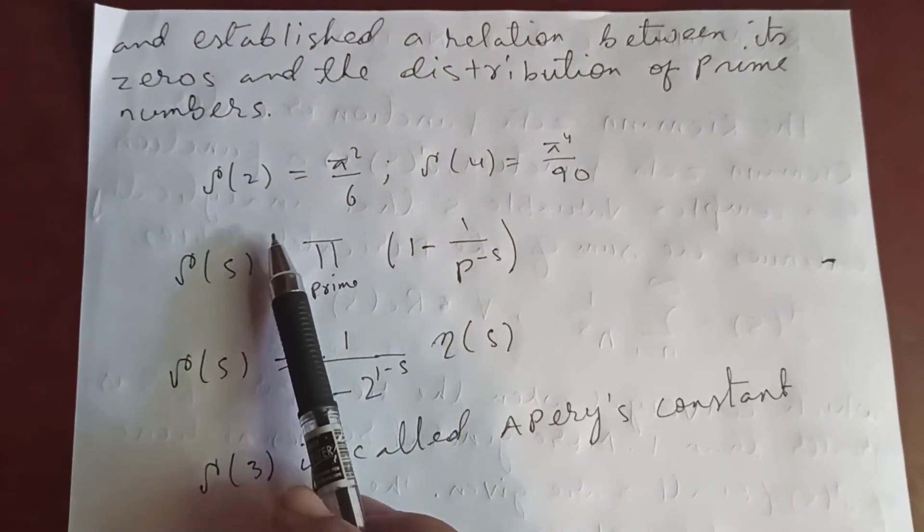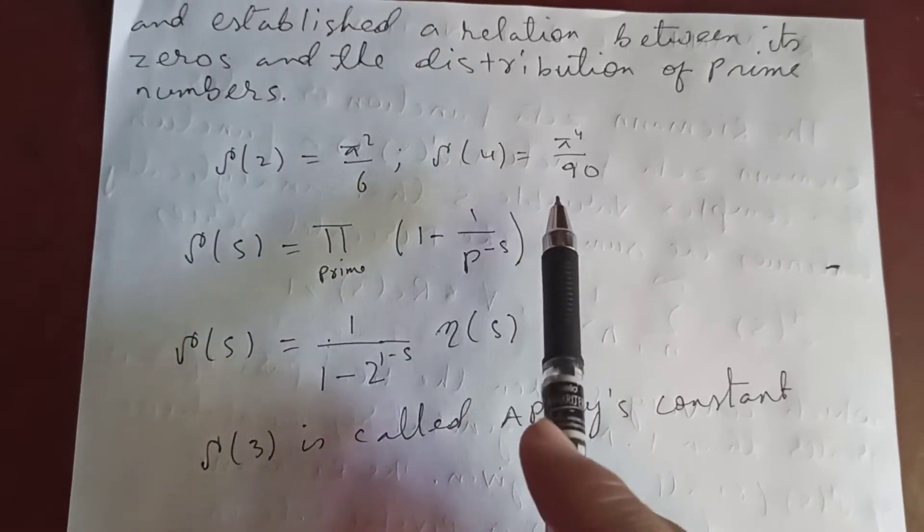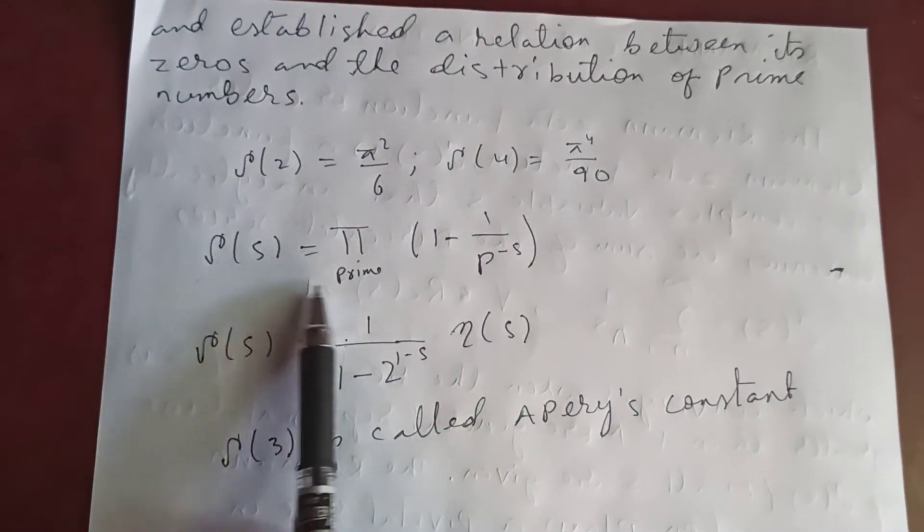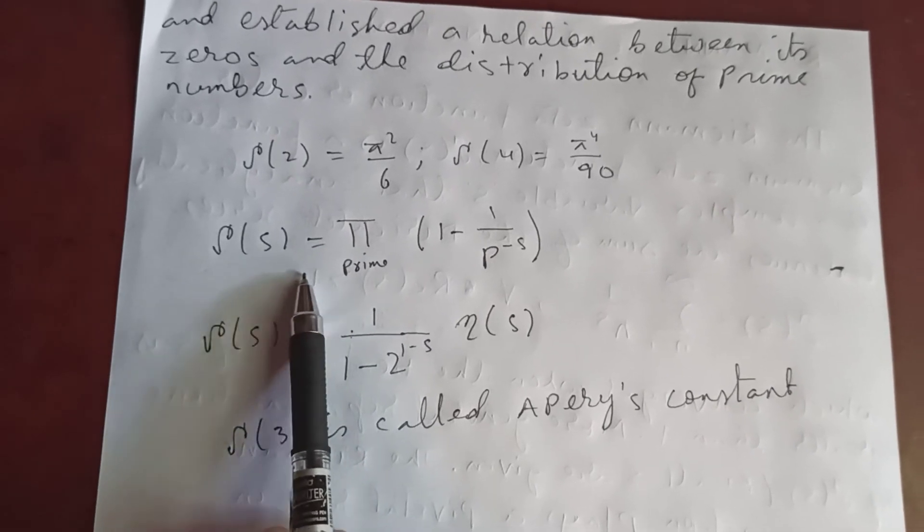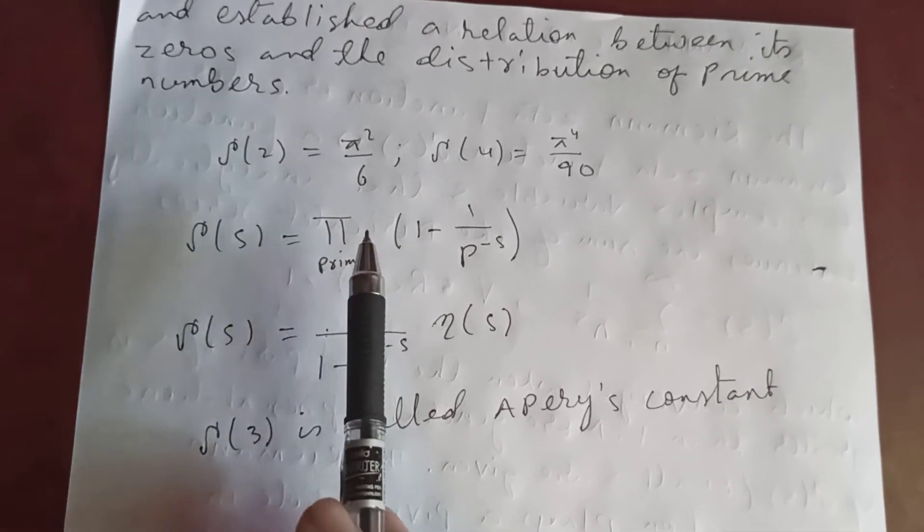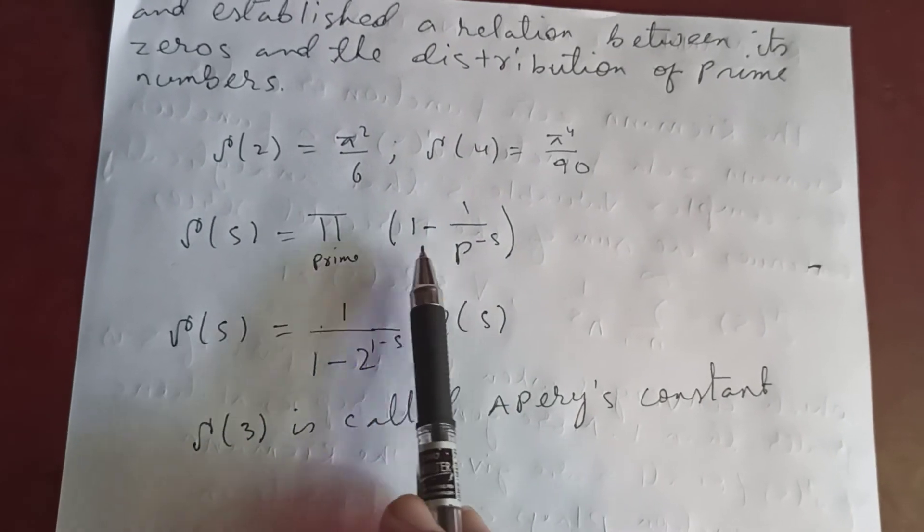In the last video we studied about this: zeta of 2 is pi squared over 6, zeta 4 is pi to the fourth over 90, and this is the Euler product.